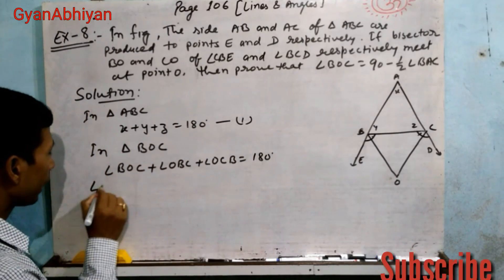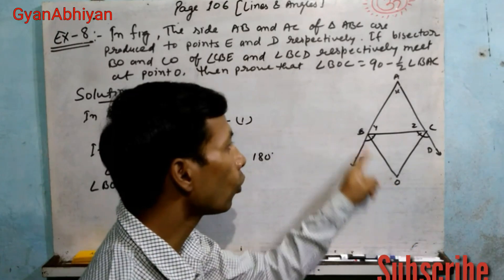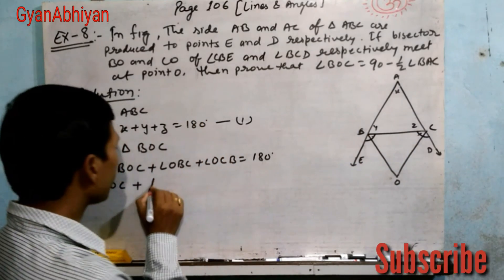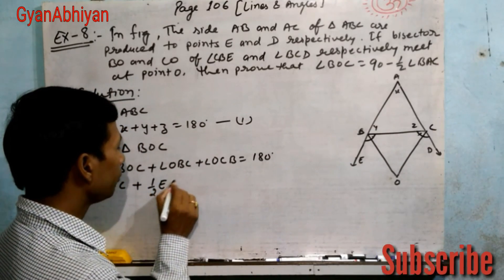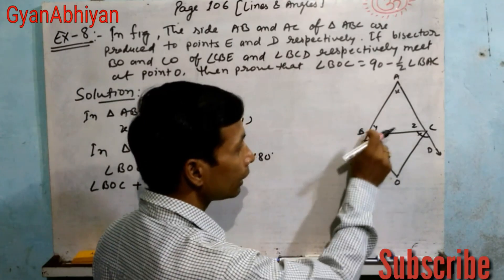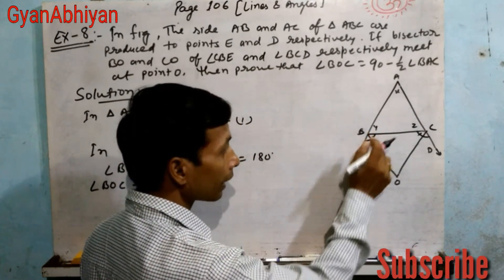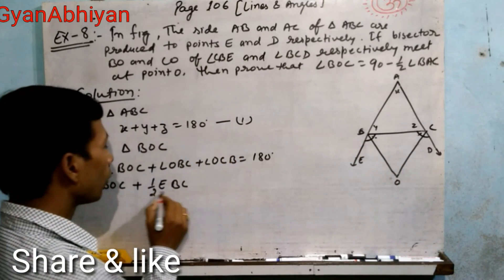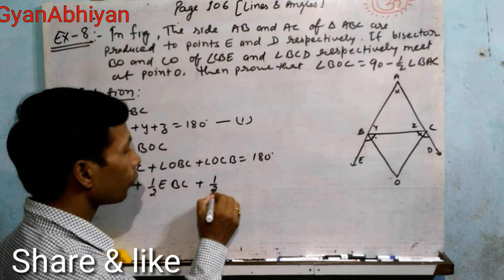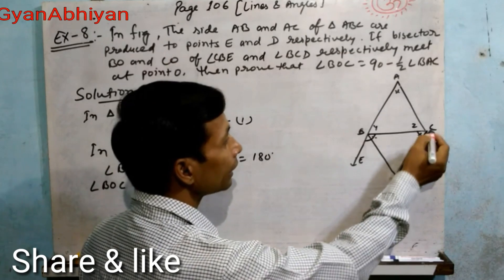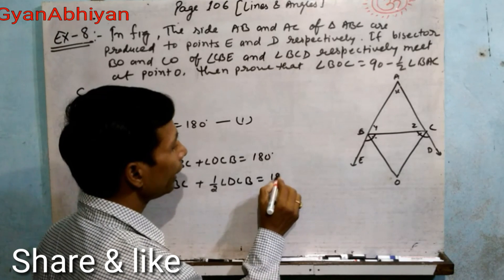अब angle OBC को हम 1/2 angle EBC लिख सकते हैं, क्योंकि BO इस पूरे angle EBC का bisector है — तो angle OBC उसका आधा होगा। इसी तरह angle OCB को 1/2 angle DCB लिखेंगे। तो equation बनती है: angle BOC plus 1/2 angle EBC plus 1/2 angle DCB equal to 180 degree.